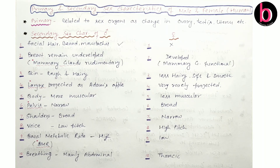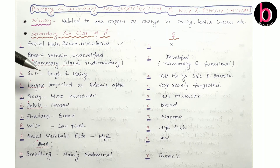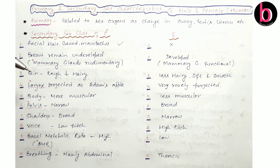In the case of human males, the skin is rough and hairy, while in human females, the skin is usually less hairy, soft, and smooth.